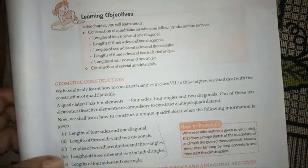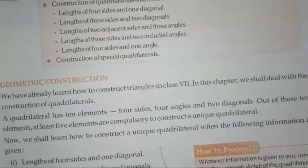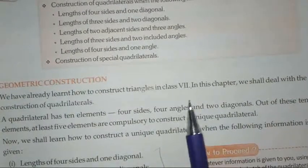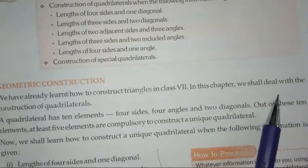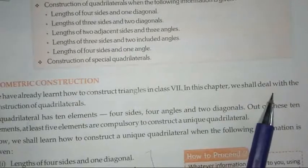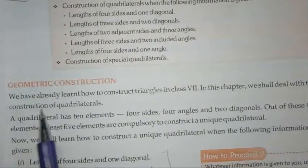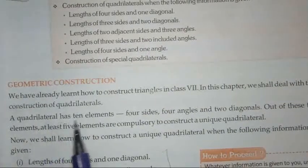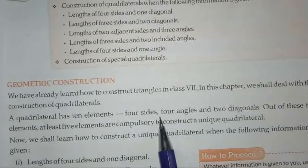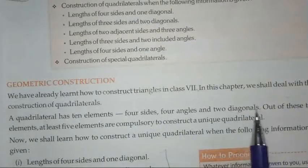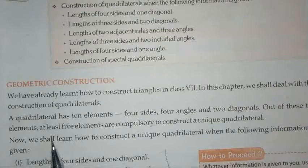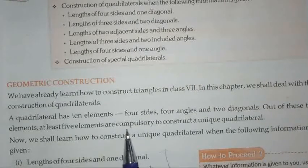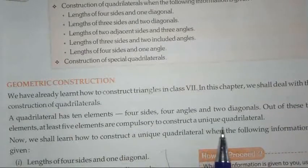We have already learned how to construct triangles in 7th class. In this chapter, we shall deal with the construction of quadrilaterals. A quadrilateral has 10 elements: 4 sides, 4 angles, and 2 diagonals. Out of these 10 elements, at least 5 elements are compulsory to construct a unique quadrilateral.